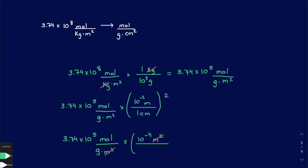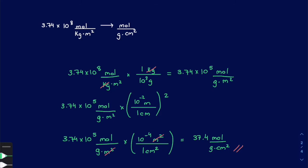Applying the exponent to the bottom: 1 squared is just 1, giving 1 cm squared. Now we have the units we want and can do the calculation: 3.74 times 10 to the 5th divided by 10 to the 4th (because it is a negative exponent) gives a final answer of 37.4 moles over grams per centimeter squared. That's how you deal with units that are either squared or cubed.